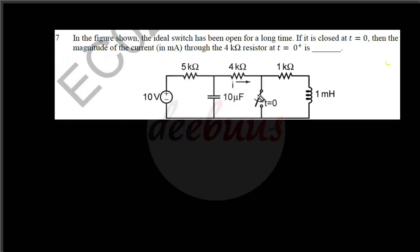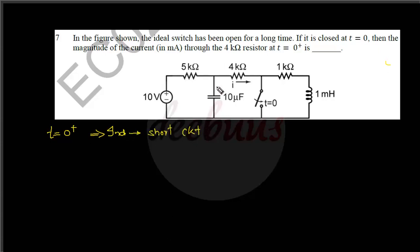In the figure shown, the ideal switch has been open for a long time — meaning steady state condition is attained, so the inductor behaves as a short circuit. The switch is closed at t = 0. We need the magnitude of current through the 4 kΩ resistor at t = 0+. At t = 0+, the inductor behaves as a short circuit.